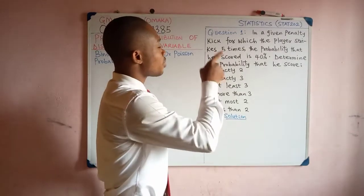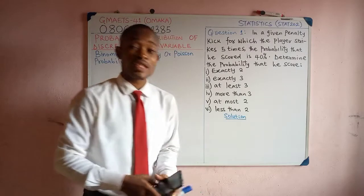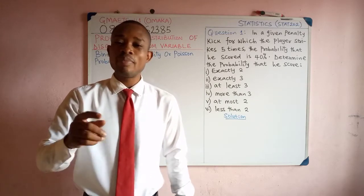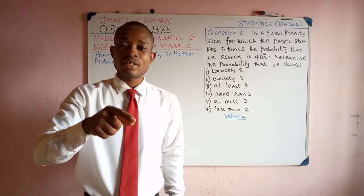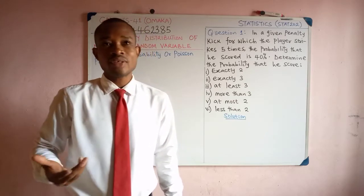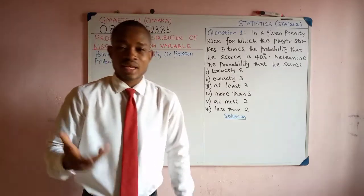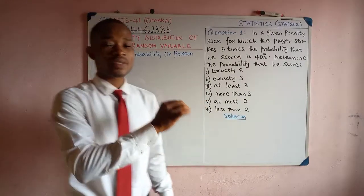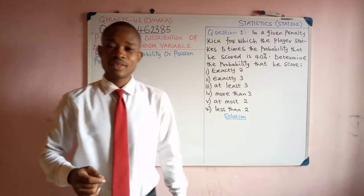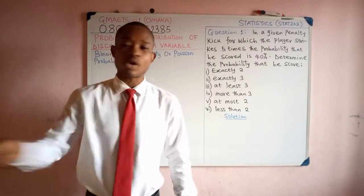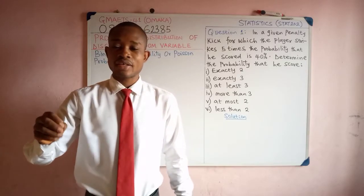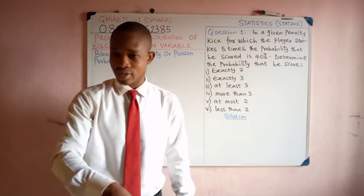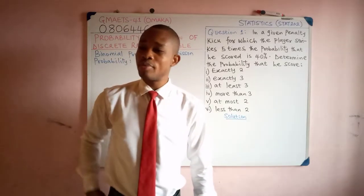Now if you look at the question, the probability that the player scored is 40%. The term 'success' in probability simply means that we are sure that the event took place or is going to take place. When you hear success in probability, it really doesn't mean that the thing is good. For this question, the probability of success is that the person scored — 40%. The question could have been saying that the probability that the player did not score.